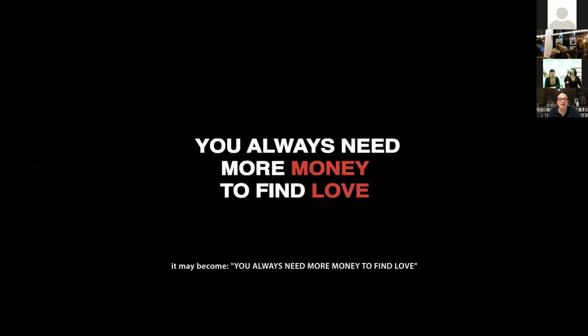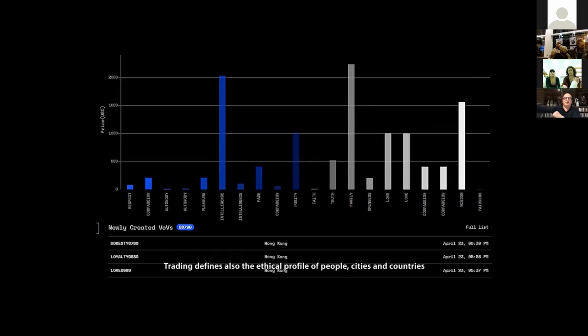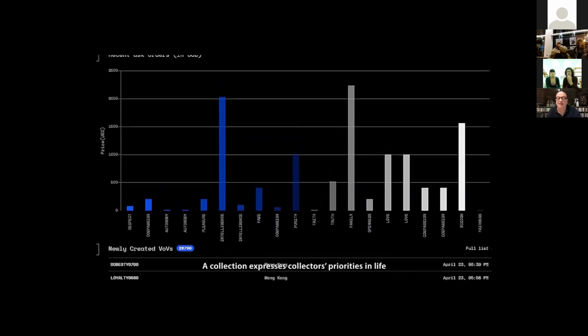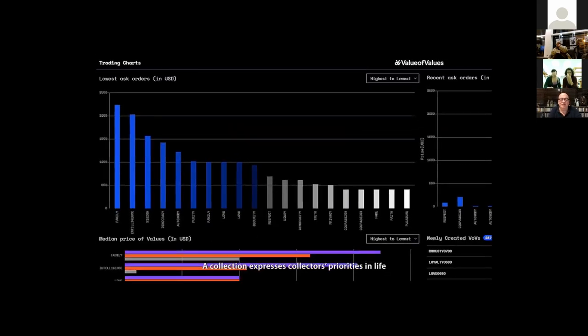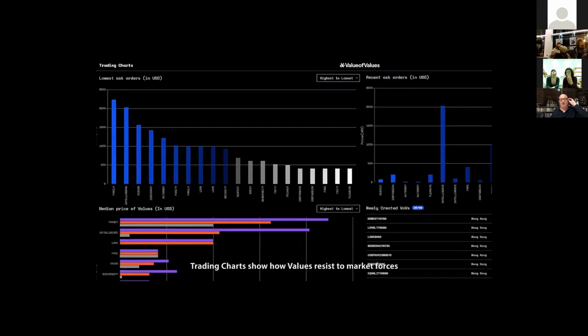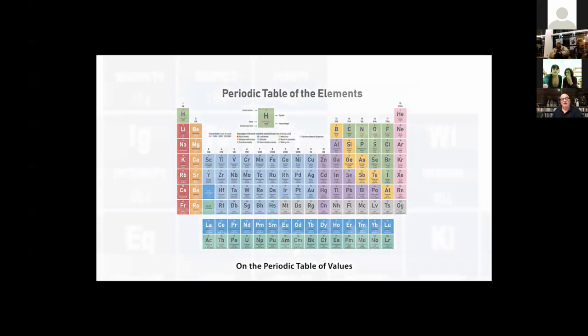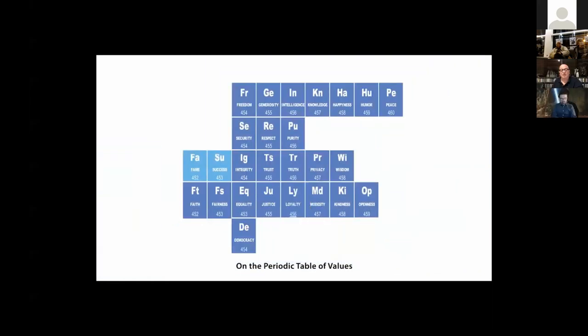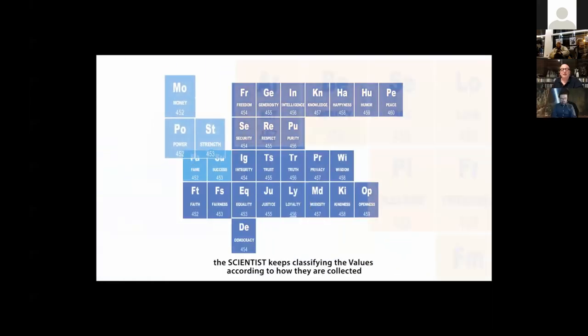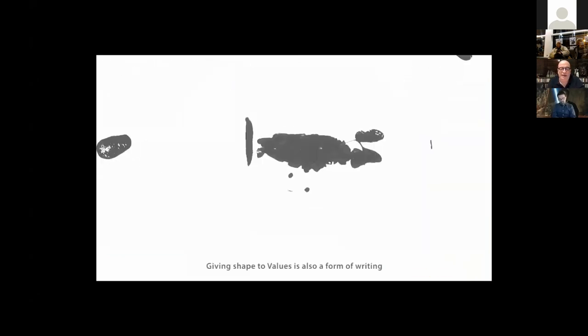For example, it can be you always need more money to find love. And on the website, you can see it. It's vov.art. You can see the ranking of values, the relative value of values, the evolution of the values, and you know exactly what people are ready to pay for each human value. But you can also see how cities and countries rank their values. In the future, we plan to create the periodic table of values, where scientists will put together values, the proximity of values according to how they are collected by people.